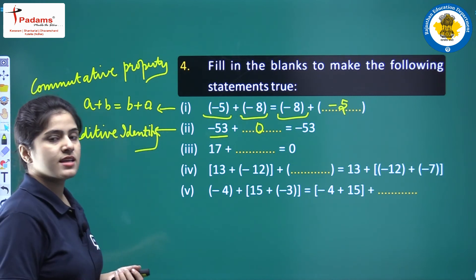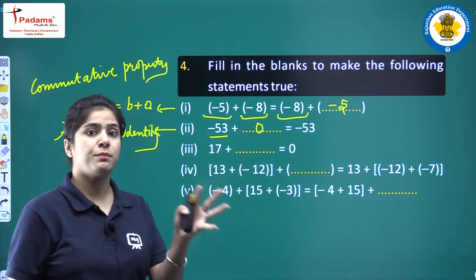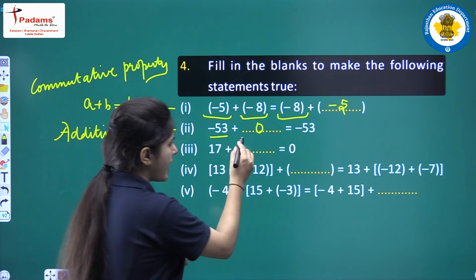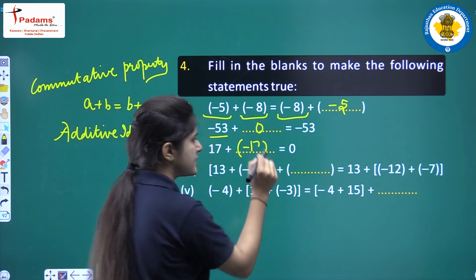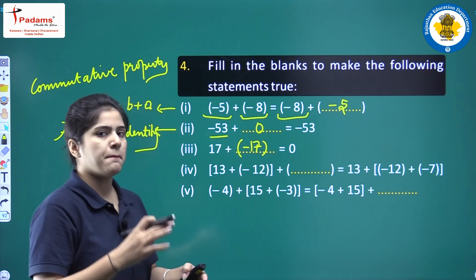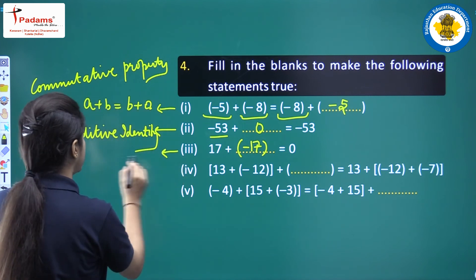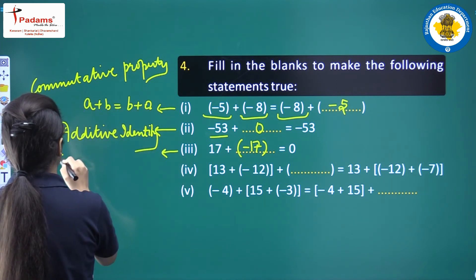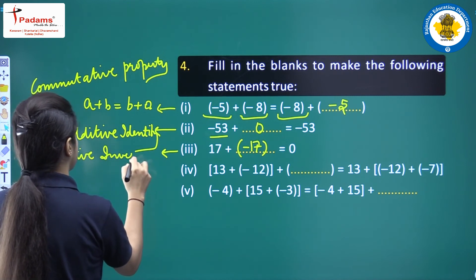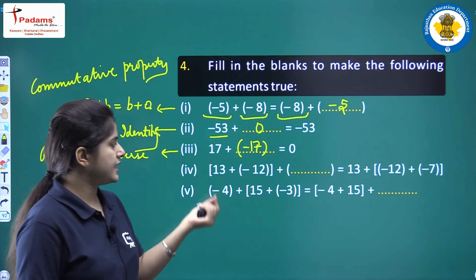Part c: 17 plus blank equals 0. What should be added to 17 to get 0? The answer is minus 17, since 17 plus minus 17 equals 0. This is the additive inverse property.